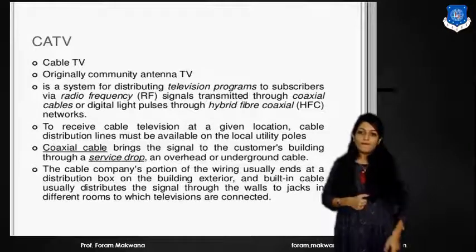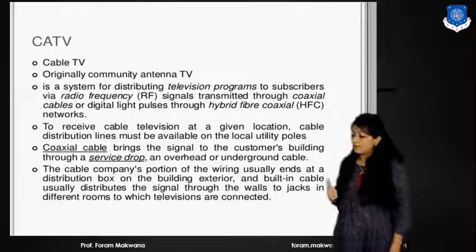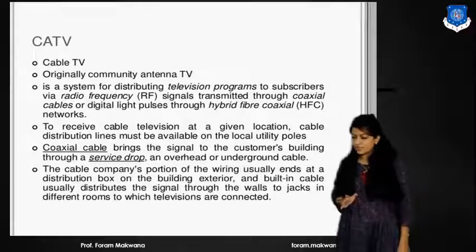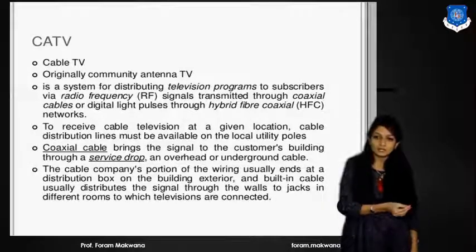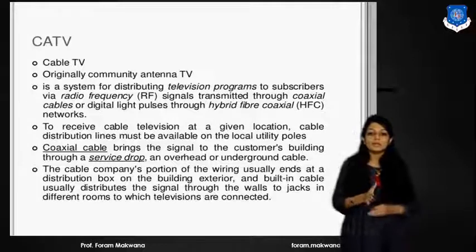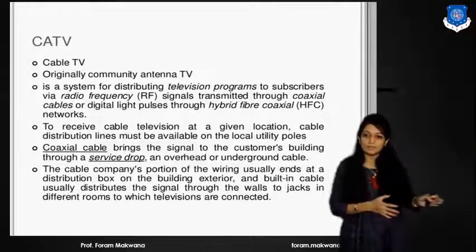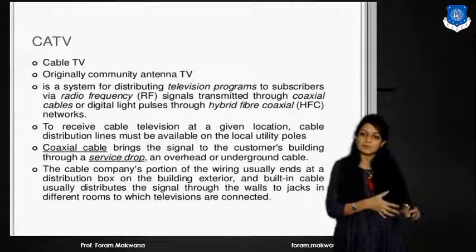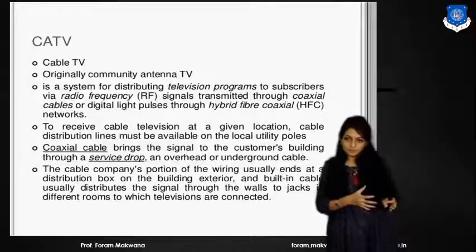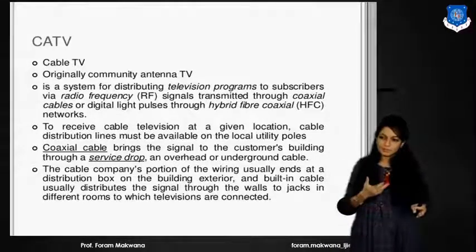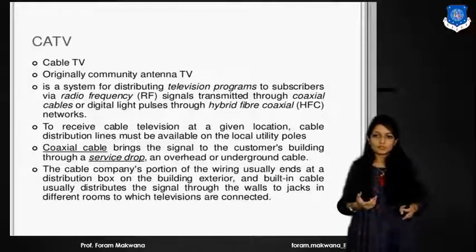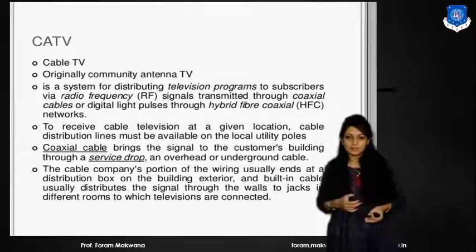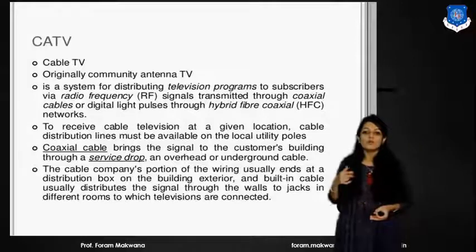The signal from the outer unit is received by the broadband receiver, filtered and demodulated by the channel filters into two parts: even channels and all channels. These channels are again combined into a standard multiplex to transmit the channels to the subscribers. CATV means community antenna TV system, where we are able to distribute television channels or programs to subscribers via a radio frequency system transmitted through coaxial cables. We are also able to transmit digital light pulses through hybrid fiber coaxial cables.